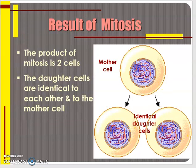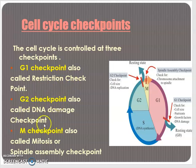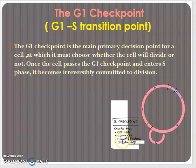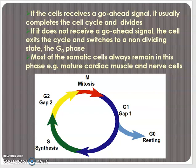The result of mitosis is two identical daughter cells. In the mitotic cell cycle, there are three main checkpoints. The first is the G1 checkpoint, also called the restriction checkpoint. The G2 checkpoint is known as the DNA damage checkpoint, and the M checkpoint is also called the mitosis or spindle assembly checkpoint. The G1 checkpoint, between G1 and S phase, is the primary decision point where cell size, nutrients, growth factors, and DNA damage are checked. If everything is okay, the cell cycle continues. If the go-ahead signal is not received, the cycle exits to the non-dividing G0 phase.